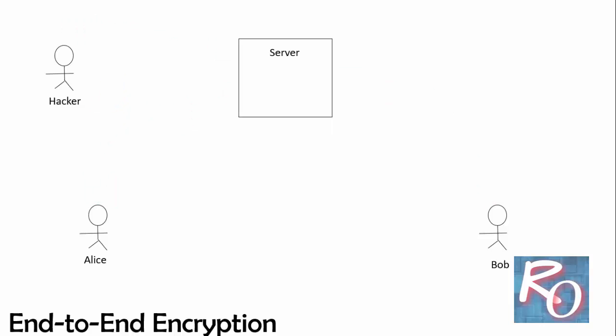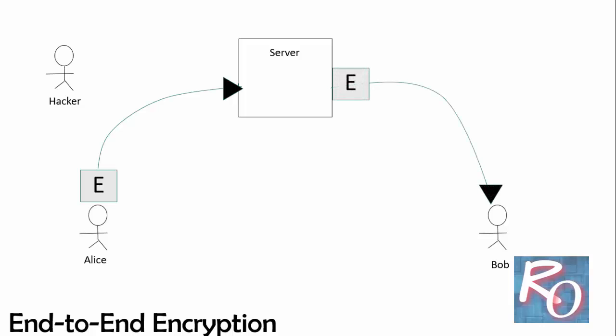To avoid this drawback, end-to-end encryption was introduced. The message is first encrypted by Alice and then sent to the server, but here the message is not decrypted and saved at the server — instead, it is forwarded directly to Bob.